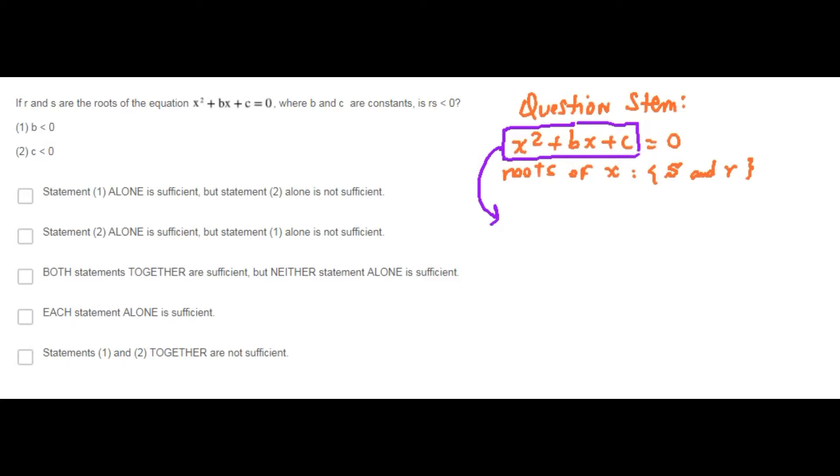Since the roots of x are S and R, the factors of this expression are x minus R times x minus S. If we solve this product, we get x squared minus (R plus S) times x plus R times S equals 0.